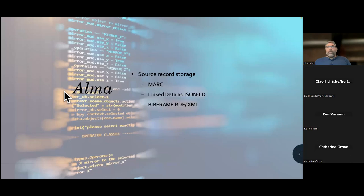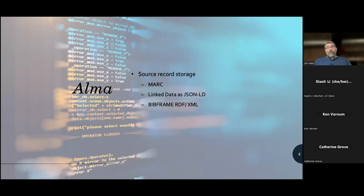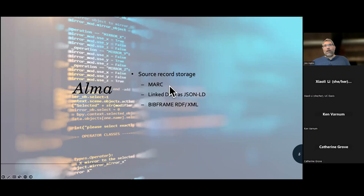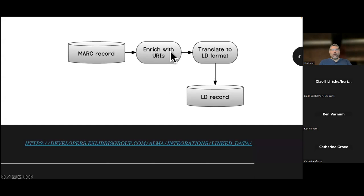Within Alma, we see this as the backbone of our source record storage. We have MARC within Alma. If you enable the linked data integration, you can publish some JSON-LD. There's also the possibility of using the Library of Congress transformation tooling — taking your MARC and expressing it as BibFrame in RDF XML. There's some ready functionality here. What's key is that Alma is the backbone for the MARC that we have, and building on the MARC, there's been this enrichment with URI enrichment and translating into various linked data formats.